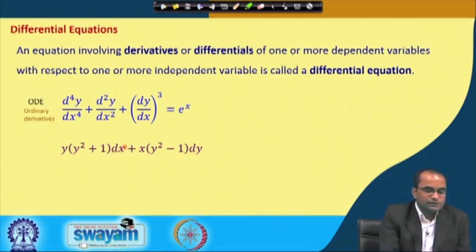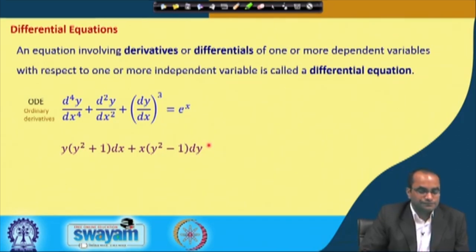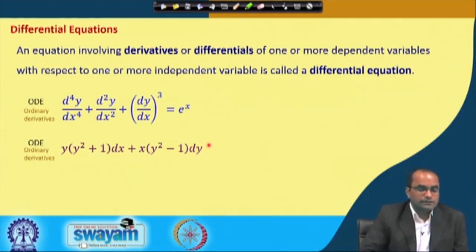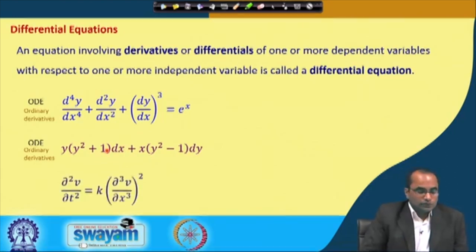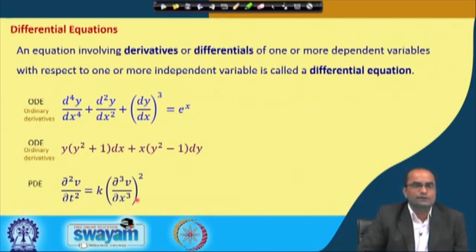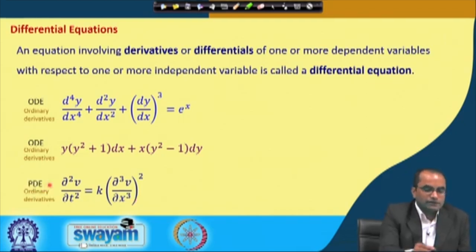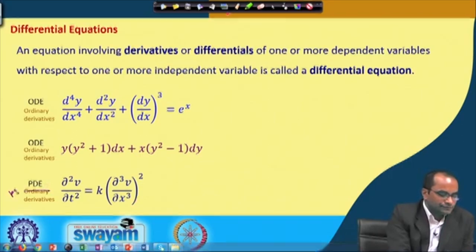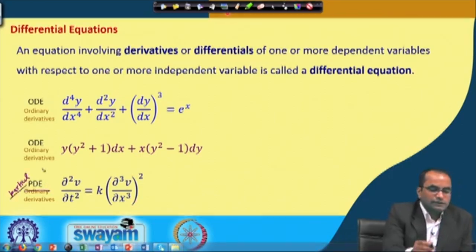The second equation is also an ordinary differential equation with ordinary derivatives only — one dependent variable y and one independent variable x. In contrast, where we have two independent variables x and t, and v depends on both x and t, we have partial derivatives in the equation. Therefore, this is called a partial differential equation or PDE.